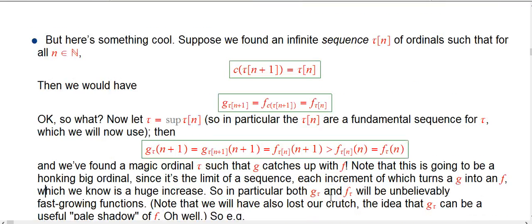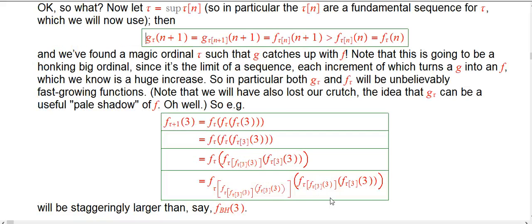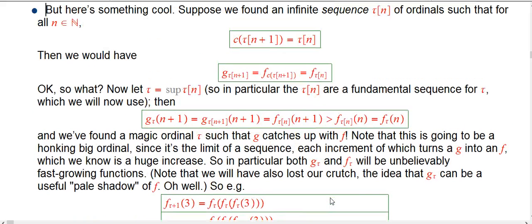Suppose we were able to find an infinite sequence, call it tau of n, of ordinals. I'm using those brackets advisedly because we're going to use it as a fundamental sequence for a slightly bigger ordinal.